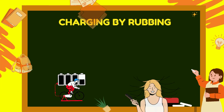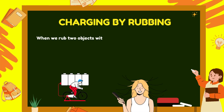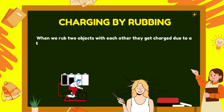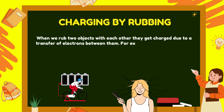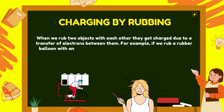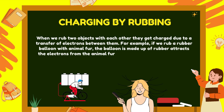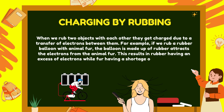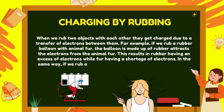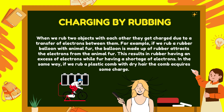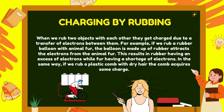Charging by rubbing: When we rub two objects with each other, they get charged due to a transfer of electrons between them. For example, if we rub a rubber balloon with animal fur, the balloon attracts the electrons from the fur, resulting in the rubber having an excess of electrons while the fur has a shortage. Similarly, if we rub a plastic comb with dry hair, the comb acquires some charge.